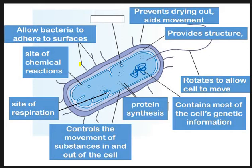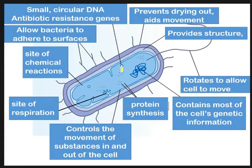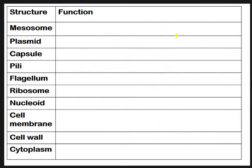Then we've got pili, which allow the bacteria to attach - to stick to surfaces and stick to each other. And lastly, we've got the plasmid, which is a small, round, circular section of DNA. That's where you'll find different genes to those in the nucleoid, including your antibiotic resistance genes. Have a go and see if you can fill in the table from memory, or rewind the video and watch that again.